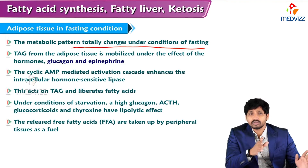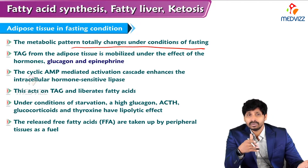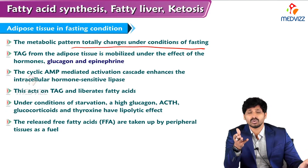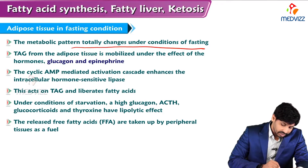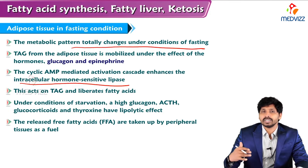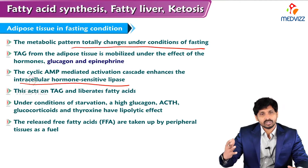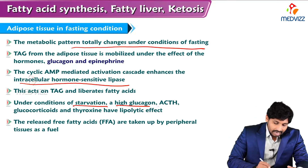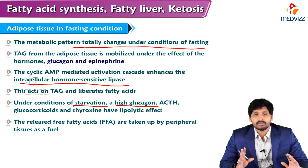Free fatty acids undergo beta-oxidation to provide energy. At the same time, glycerol will be transported back to the liver, where it is converted to an intermediate of gluconeogenesis. The cyclic AMP mediated activation cascade enhances intracellular hormone-sensitive lipase - via cAMP it activates protein kinase, and protein kinase converts inactive hormone-sensitive lipase to active hormone-sensitive lipase. Under conditions of starvation, high glucagon, adrenocorticotropic hormone, glucocorticoids, and thyroxin all have lipolytic effect.